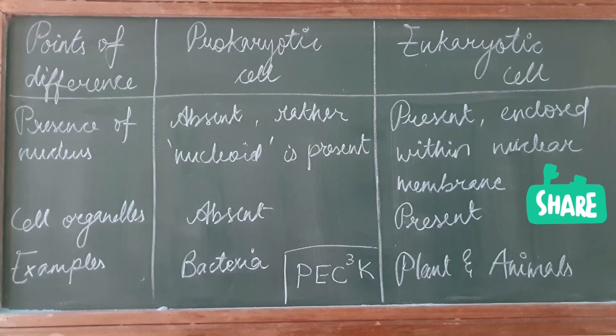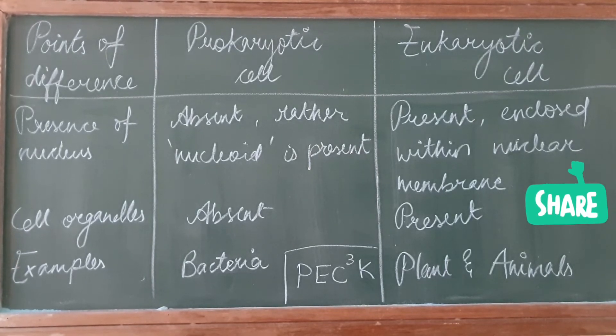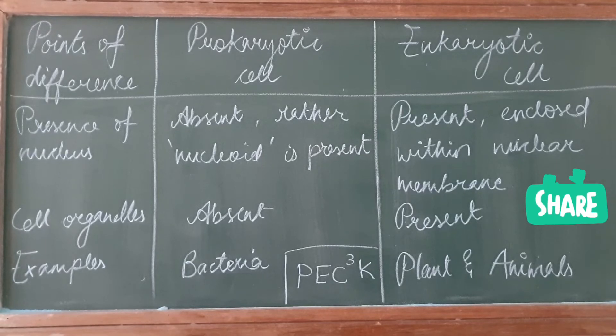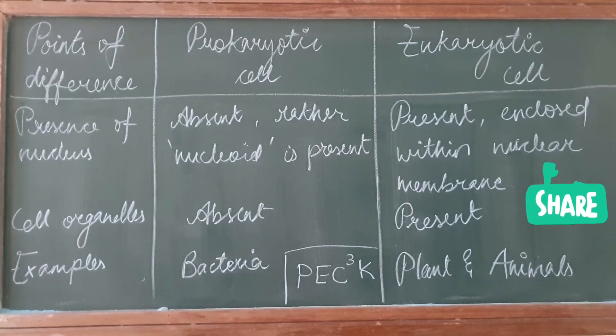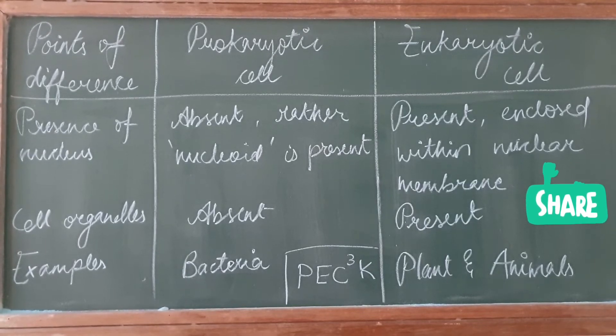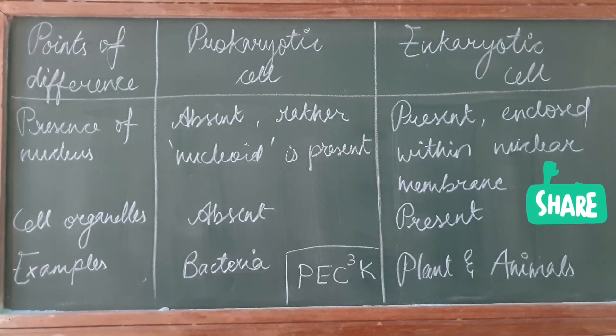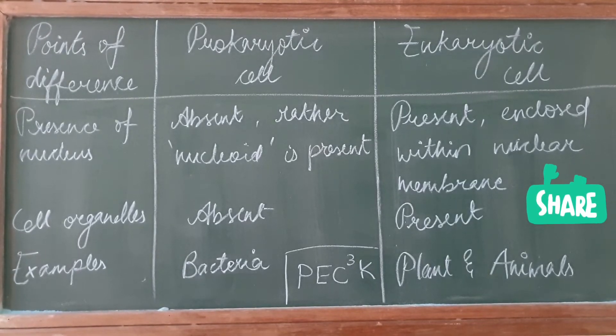The next point of difference is examples. In prokaryotic cell, the example is bacteria, and in eukaryotic cell, the examples are plants and animals.